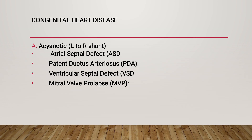Atrial septal defect (ASD), also called ostium secundum type, is the most common congenital heart lesion during pregnancy. Even uncorrected ASD will tolerate pregnancy and labor well. Congestive cardiac failure unresponsive to medical therapy requires surgical correction. Shunt reversal is the major risk, which may develop in hypovolemia — occurring in hemorrhagic conditions and following injudicious administration of epidural anesthesia. In the absence of arrhythmias and pulmonary hypertension, ASD does not usually complicate pregnancy.